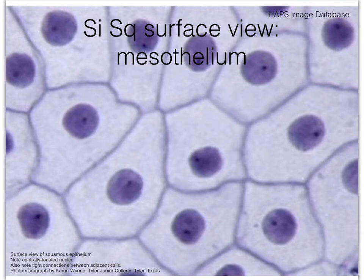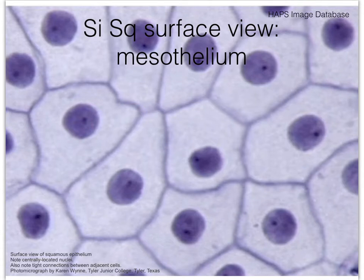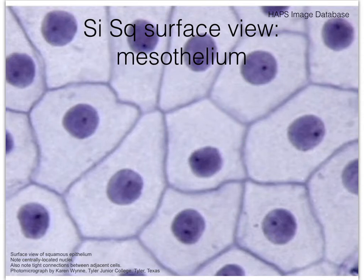Before we move on to simple cuboidal, we need to learn to visualize simple squamous epithelial tissue from a different viewpoint. So far we've looked at the cells from the side — slicing through the length of a blood vessel or through a Bowman's capsule. But we can also have a surface view. Imagine you're inside a blood vessel looking around — then the squamous cells will actually look like puzzle pieces. To create such a slide, it's easier to use the ventral body cavity's serous membranes.